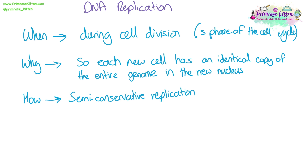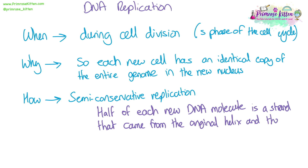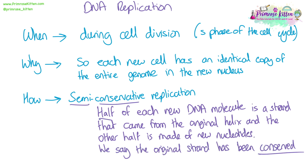How does DNA replication happen? It happens through a process called semi-conservative replication. This term comes from the fact that half of each new DNA molecule we make will come from the original DNA molecule, and the other half will be a new strand. So semi means half, and conserved means the original molecule is being conserved because half of it stays in the new DNA molecule we're making.